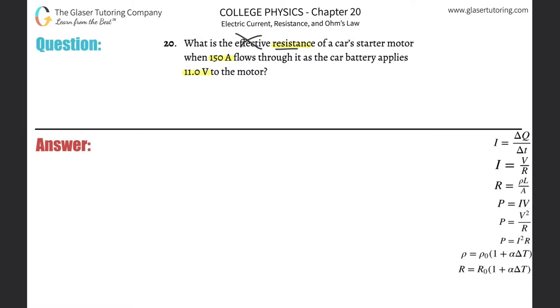So here, resistance is question mark - we don't know what it is. The current here is going to be 150 amps, and the voltage they told us is going to be 11.0 volts. What's the relationship between these three variables? Ah, Ohm's law! This will become ingrained within you by the end of our work here.